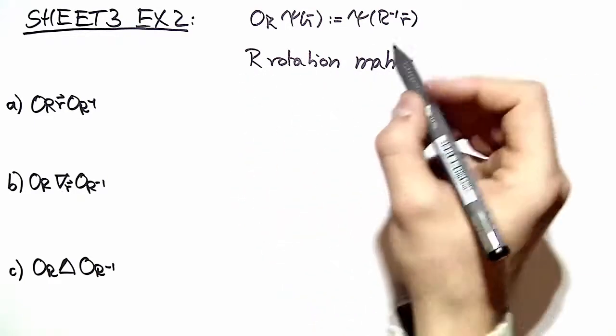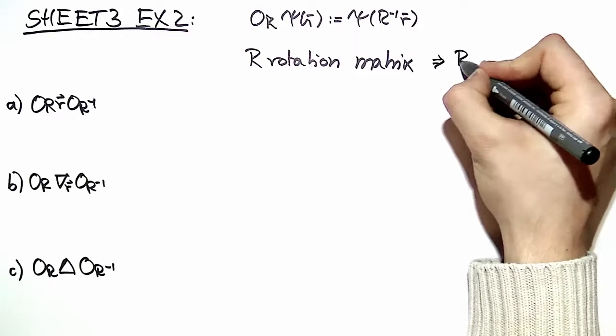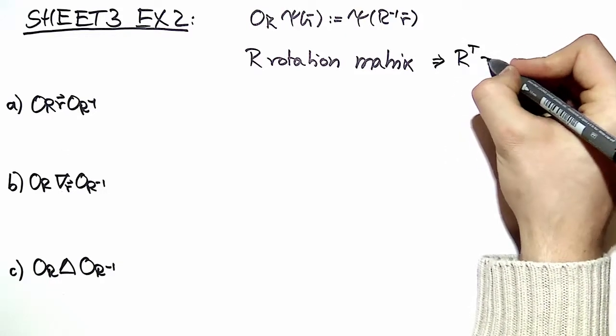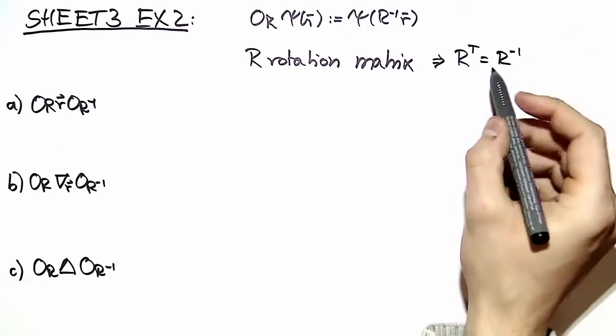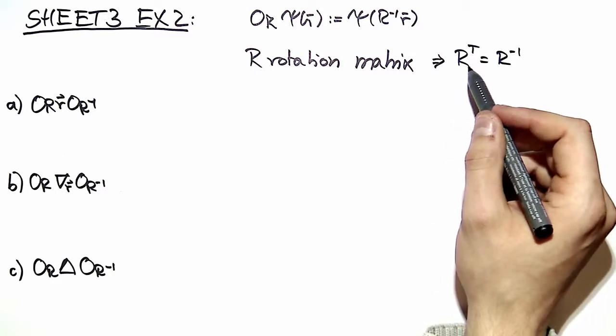If we know that R is a rotation matrix we have to conclude immediately that R transpose is equal to its inverse. We will use that in the calculation.